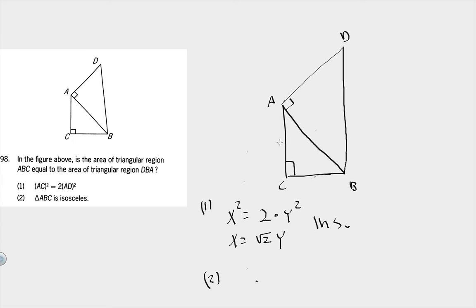For statement 2, we know that these sides are equal. We also know that this is a right isosceles, so it has a ratio of x, x, x root 2.